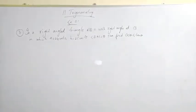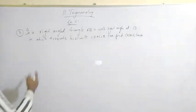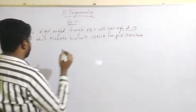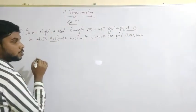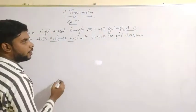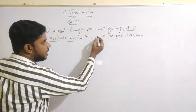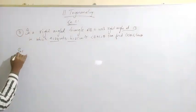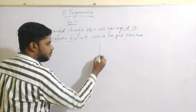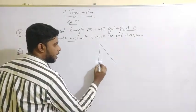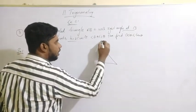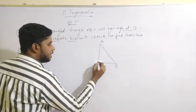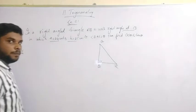Now let's see the third question. In a right angle triangle ABC, right-angled at B, small a is 24 units and small b is 25 units. The angle given is A. We need to find cos theta and tan theta. The triangle is ABC with the right angle 90 degrees at B.